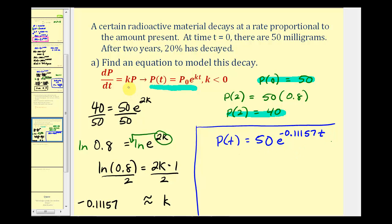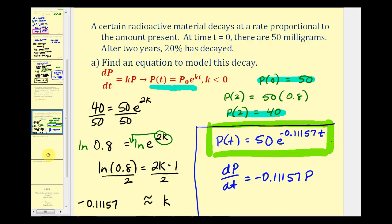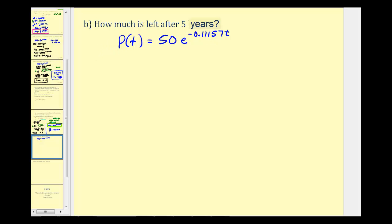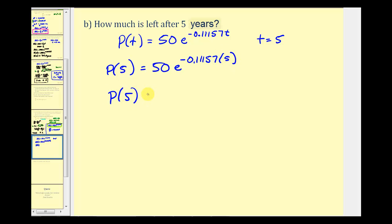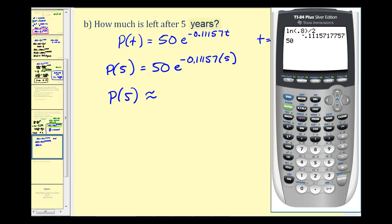This also means we could use the differential equation dp/dt equals negative 0.11157 times p to model this exponential decay, but the question is only asking us for the exponential function. Now for part B, we want to know how much is left after five years, so t equals five. P of five equals 50 times e raised to the power of negative 0.11157 times five. Computing this on the calculator gives us approximately 28.6 milligrams.